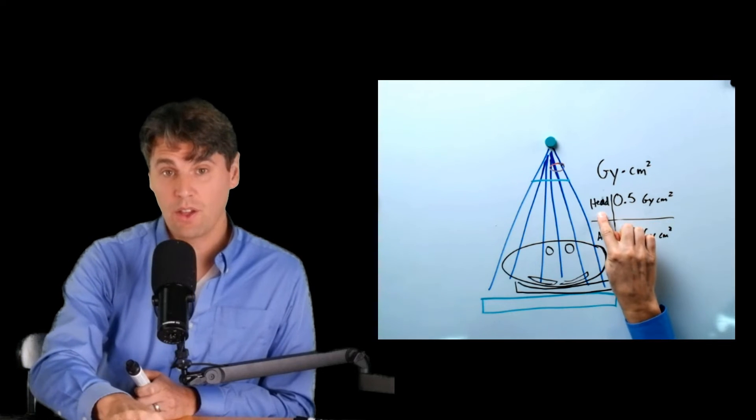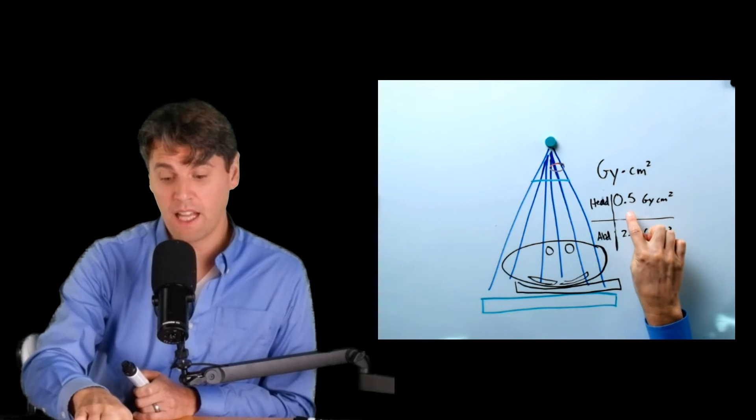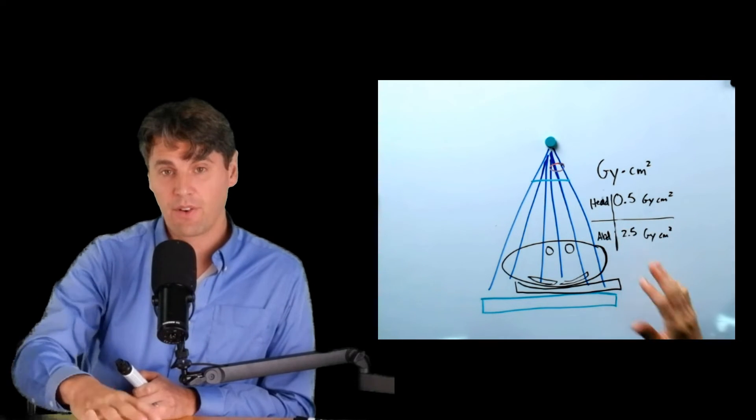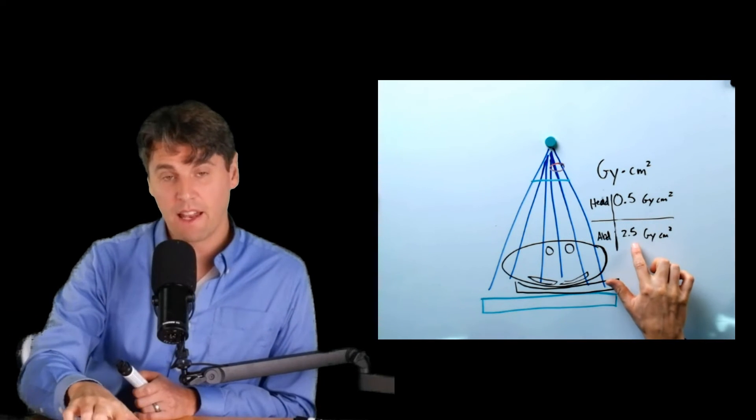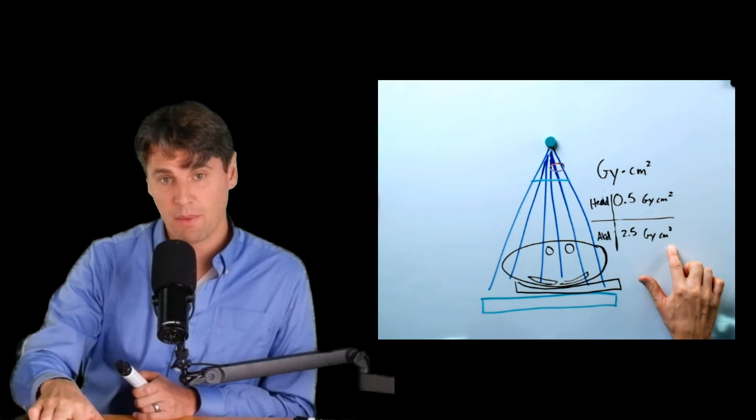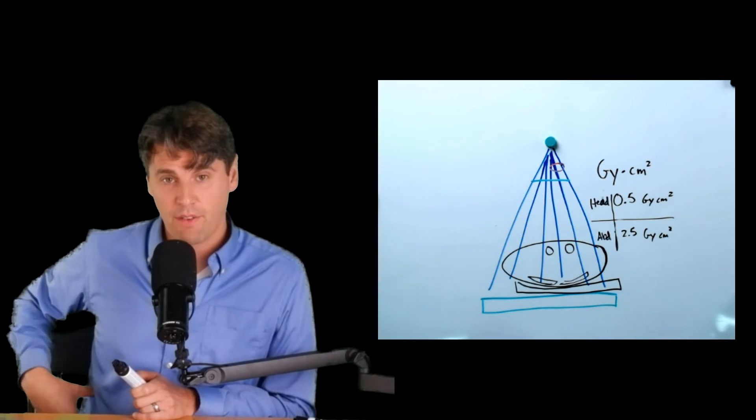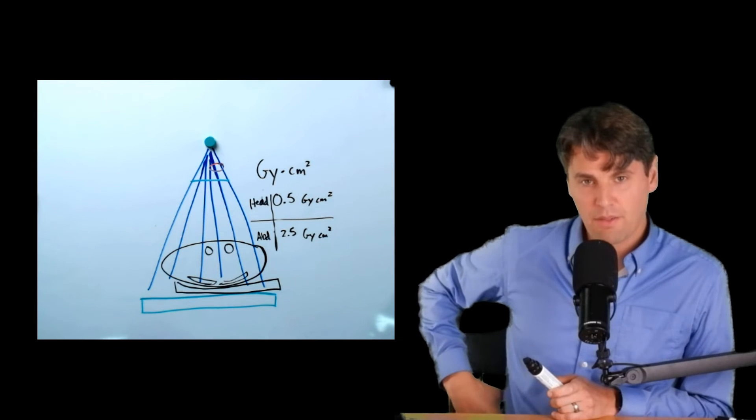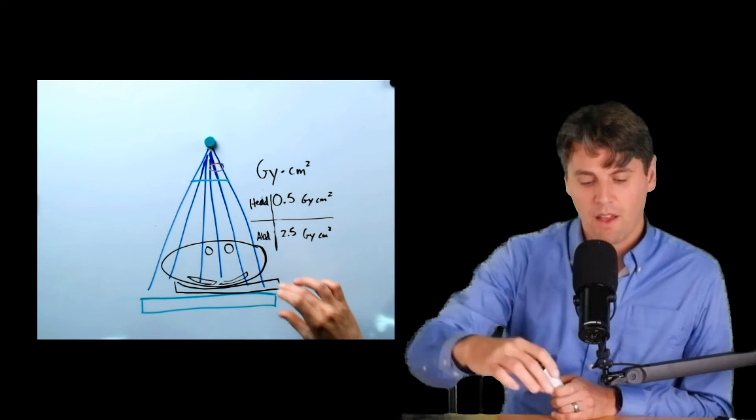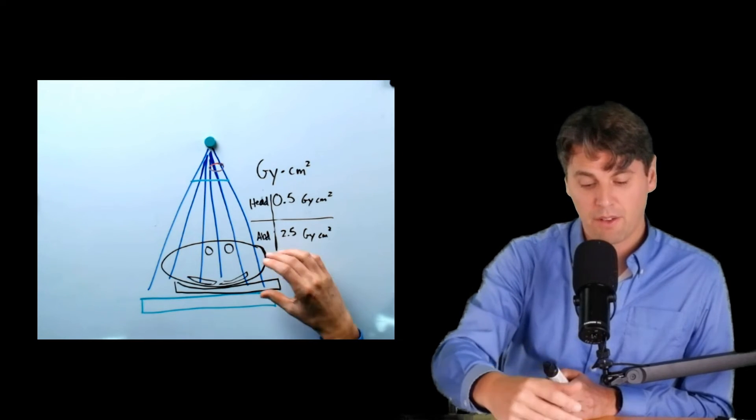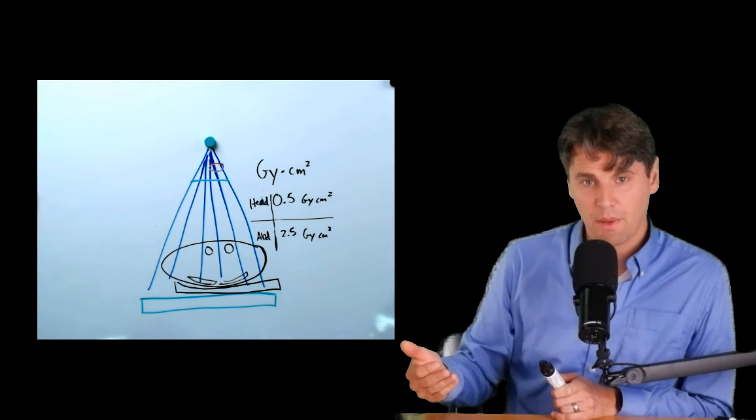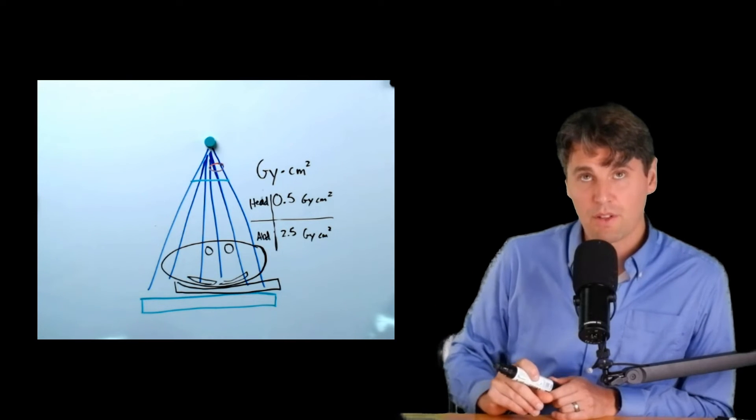For a head, you're usually looking on values around one-half of a gray per centimeter squared for the Kerma area product. And for an abdomen, you're usually looking at about two and a half gray per centimeter squared for a radiograph of the abdomen, for an AP abdomen. These are for adults, and these are just approximate conversion factors, because like we talked about, it's really going to be dependent on a number of factors that you could model.